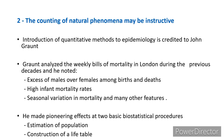John Graunt analyzed the weekly bills of mortality in London during the previous decades. He noted excess of males over females among births and deaths, high infant mortality rates, seasonal variation in mortality, and many other features related to births and deaths. He made pioneering efforts at two basic biostatistical procedures: estimation of population and the construction of a life table.